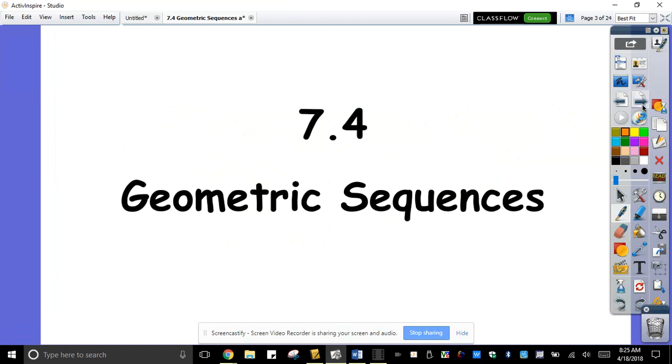Today, we're going to discuss about section 7.4, geometric sequence. Geometric sequence is something that there's a common ratio. You multiply each term to get the succeeding term.